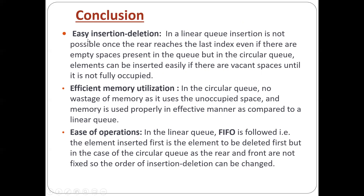In conclusion, these are the advantages of the circular queue over the linear queue. First, easy insertion and deletion: in a linear queue, insertion is not possible once the rear reaches the last index even if there are empty spaces, but in a circular queue elements can be inserted easily if there are vacant spaces until it is not fully occupied. Second, efficient memory utilization: there is no wastage of memory as the circular queue uses unoccupied spaces. Third, ease of operations: in the linear queue FIFO is followed, but in the circular queue the rear and front are not fixed, so the order of insertion and deletion can be changed.